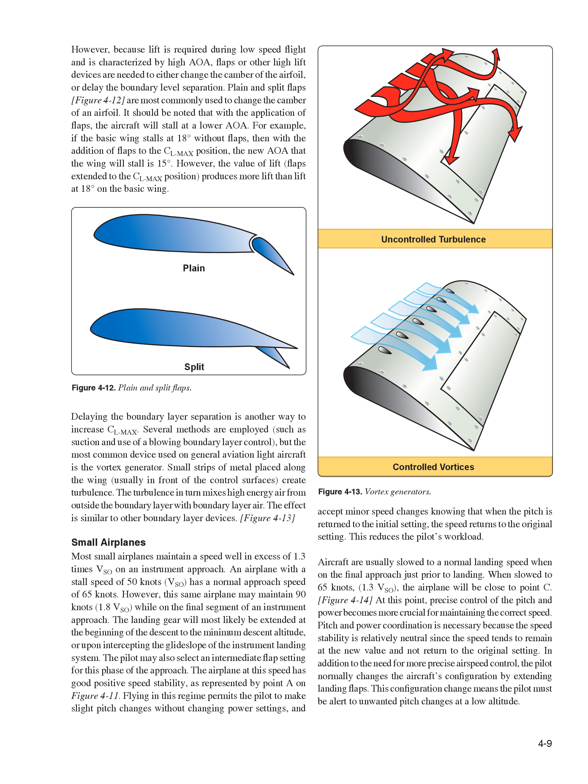Because lift is required during low-speed flight and is characterized by high AOA, flaps or other high-lift devices are needed to either change the camber of the airfoil or delay the boundary layer separation. Plain and split flaps are most commonly used to change the camber of an airfoil. With the application of flaps, the aircraft will stall at a lower AOA. For example, if the basic wing stalls at 18 degrees without flaps, then with the addition of flaps to the CL max position, the new AOA at which the wing will stall is 15 degrees; however, the flaps extended to CL max position produce more lift than the basic wing at 18 degrees.